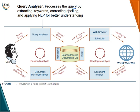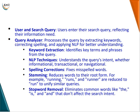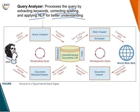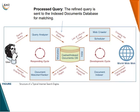The query analyzer processes the query by extracting keywords, correcting spellings, and applying natural language processing for better understanding. Specifically, it performs keyword extraction using NLP techniques, spelling correction, stemming (reducing words to their base form), and stop word removal (removing words like 'the', 'is', 'and'). Once the query passes through the query analyzer, the refined processed query is sent to the indexed document database for matching.